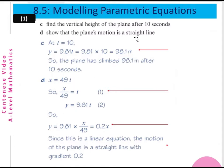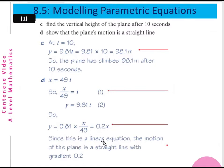Part d: Show that the pen's motion is a straight line. We know x equals 49t, so t equals x over 49. Substituting into y equals 9.81t, we get y equals 0.2x. Since this is a linear equation, the motion of the pen is a straight line with gradient 0.2.